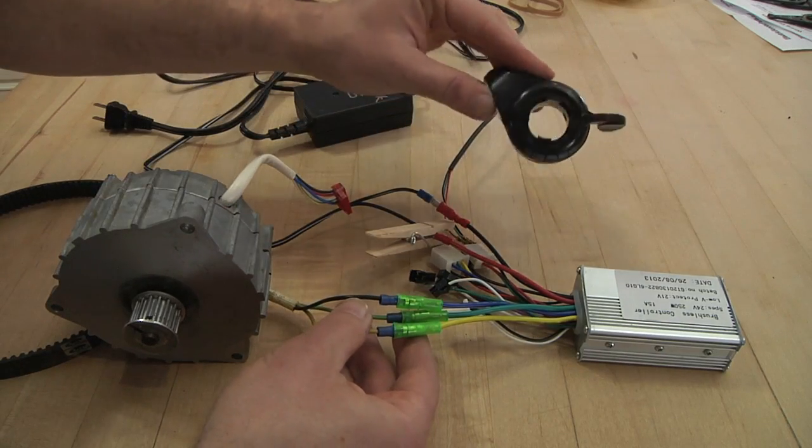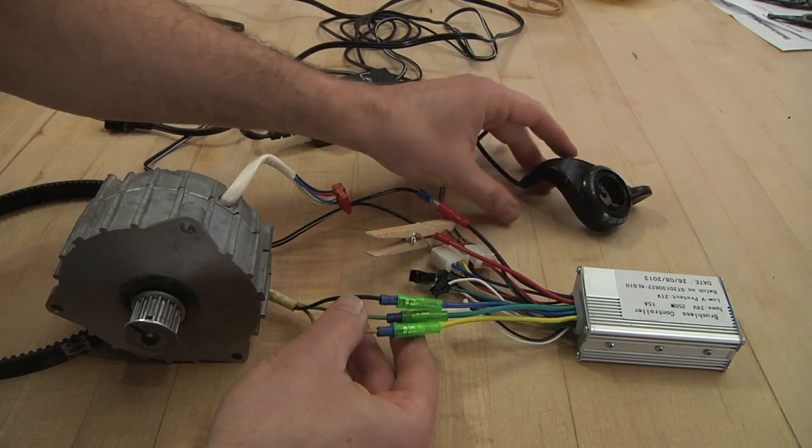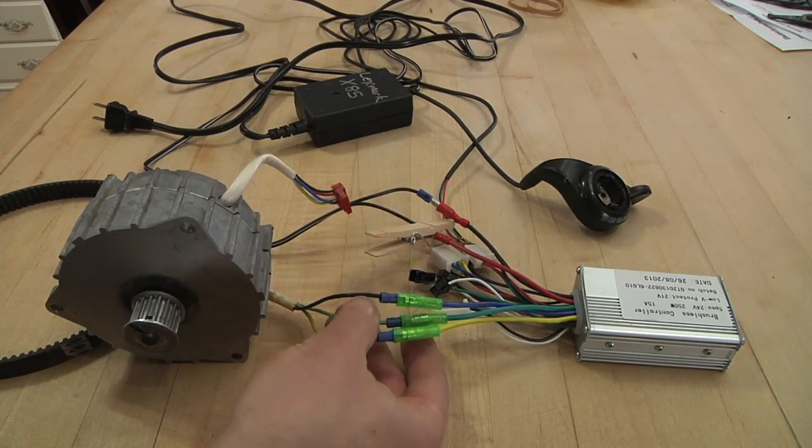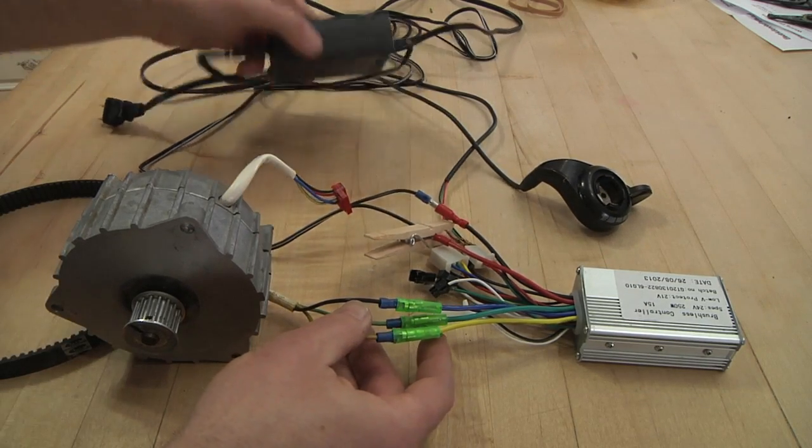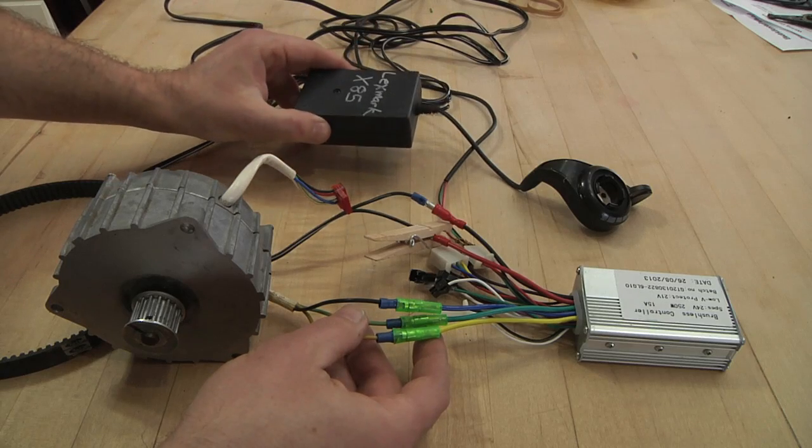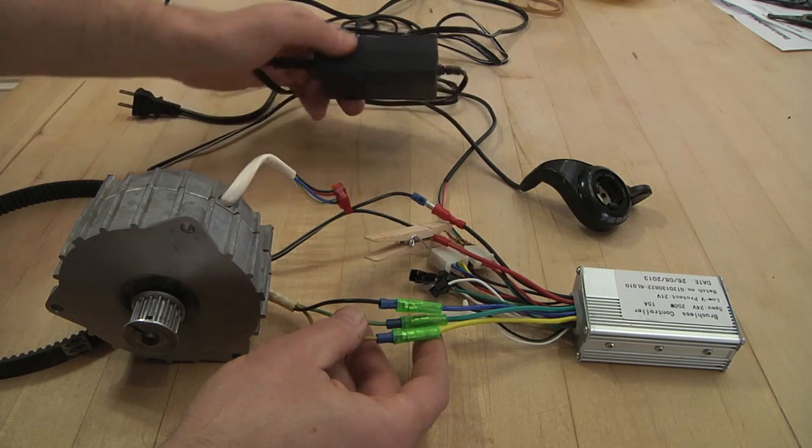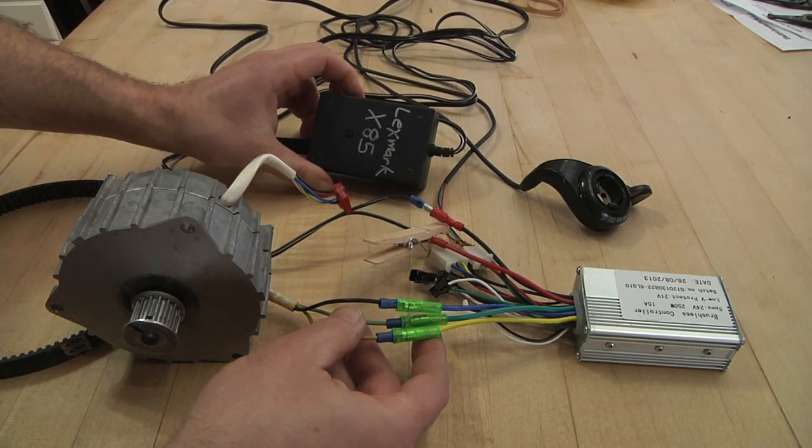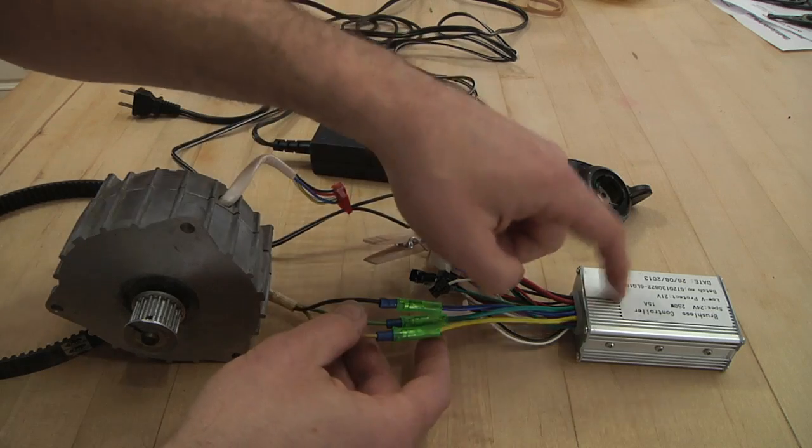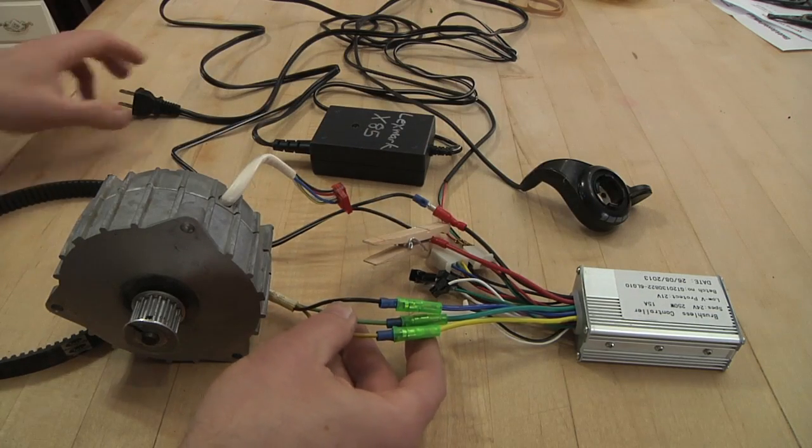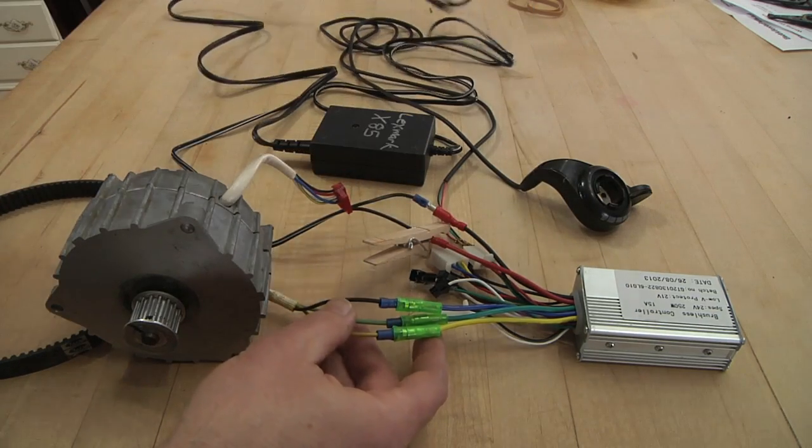And I've just temporarily hooked up the thumb throttle, and I don't even have a good bench power supply or batteries. So I'm using an old printer power supply right here. It's 30 volt out. This is a 24 volt battery system, so that should work fine. So what I'll do is I'll plug this in.